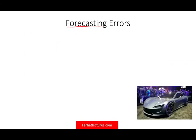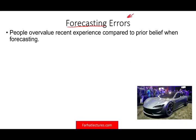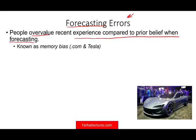Forecasting errors mean you are making an incorrect prediction. People overvalue recent experience compared to prior beliefs when forecasting — they have a memory bias. They only remember the good stuff, especially if it happened recently, and forget the bad experiences. A case in point is Tesla or the dot-com bubble. If Tesla reports good numbers in one quarter but misses three quarters, people remember only the most recent good quarter and build their forecast based on that, ignoring the three prior misses.